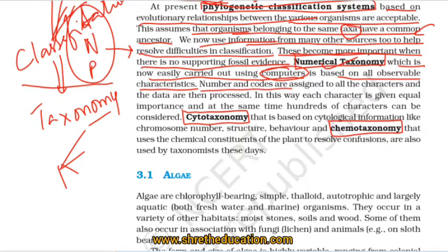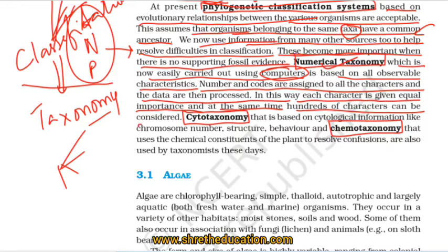Numbers and codes are assigned to all characters, and the data are then processed. Each character is given equal importance, and at the same time hundreds of characters can be considered. This approach is called numerical taxonomy.